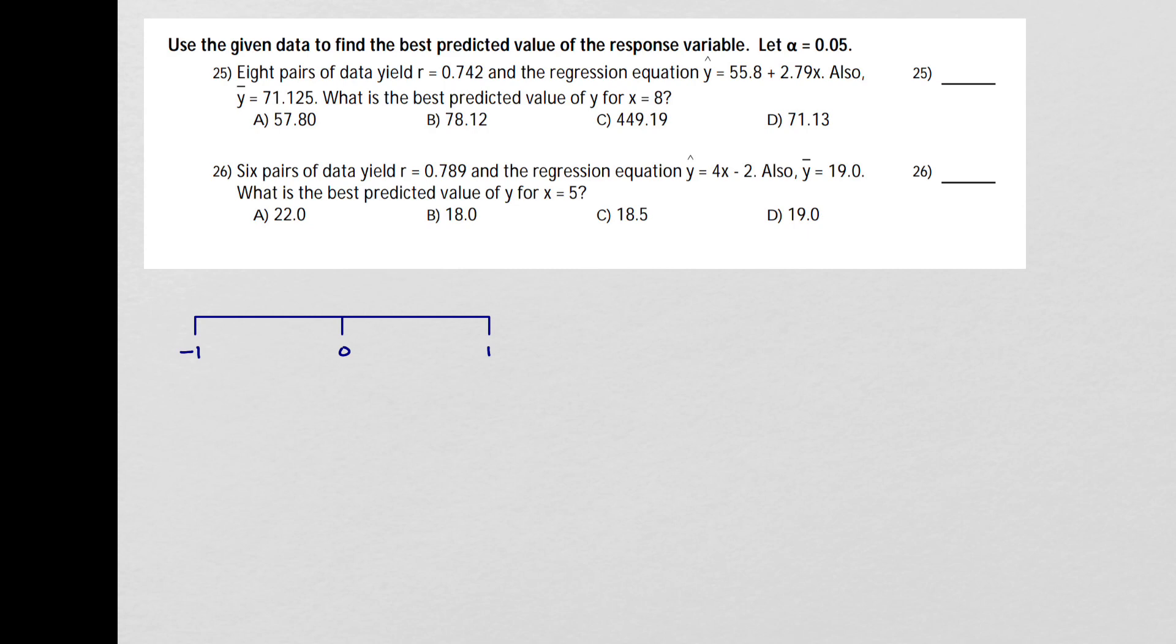If there is a strong linear relationship, we're going to use the regression equation to make that prediction. And if there is not a strong linear relationship, then really the x value doesn't matter, and we're just going to give the mean of the y values. So how do I go about this? I'm going to look at the number of pairs of data and the value of alpha, and that tells me what my critical r value is.